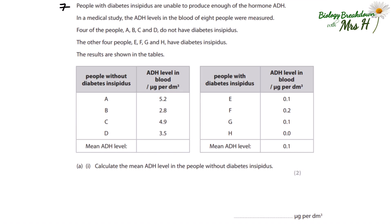Question seven: people with diabetes insipidus are unable to produce enough of the hormone ADH. In a medical study, ADH levels in the blood of 8 people were measured — 4 without diabetes insipidus and 4 with. Don't confuse this with sugar diabetes; it tells us everything we need to know. Calculate the mean ADH level in the people without diabetes insipidus: add all values up and divide by 4, which gives us 4.1 — to one decimal place, matching the other numbers in the column.